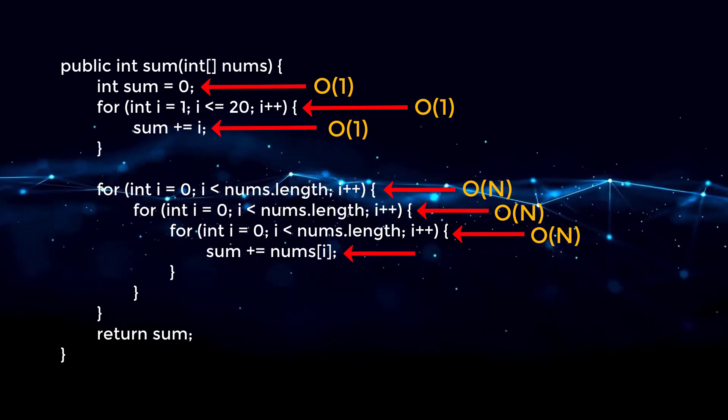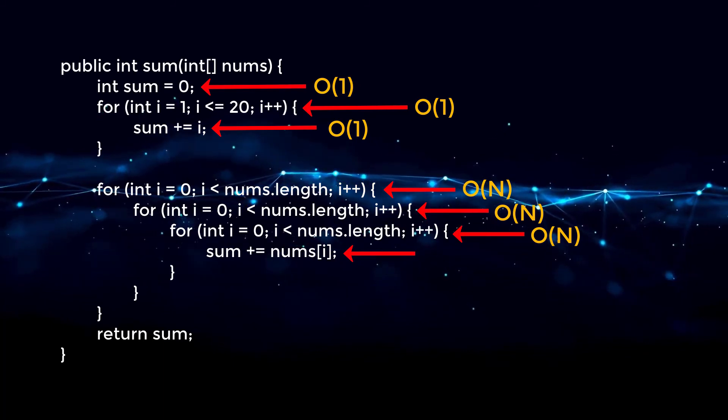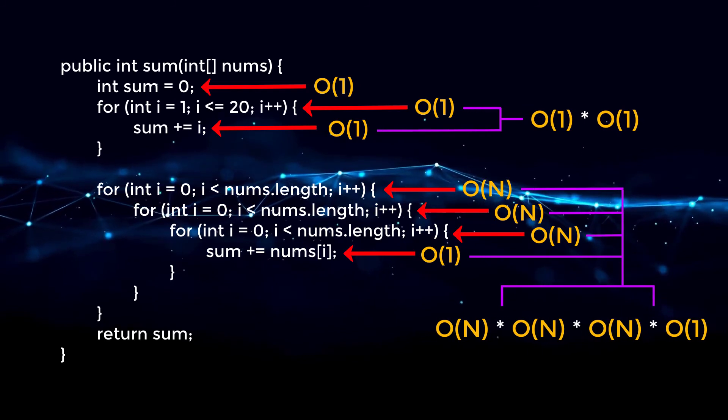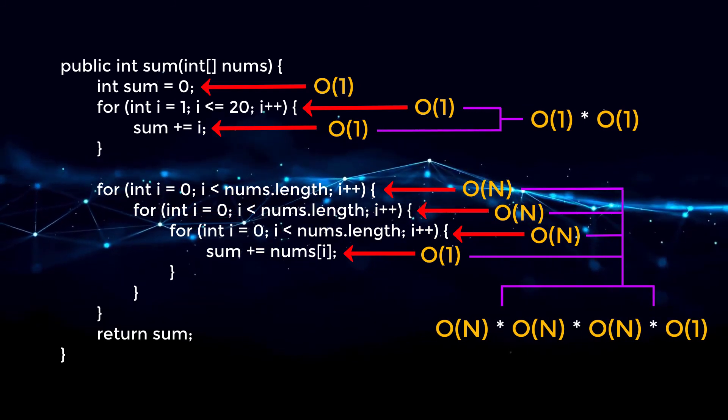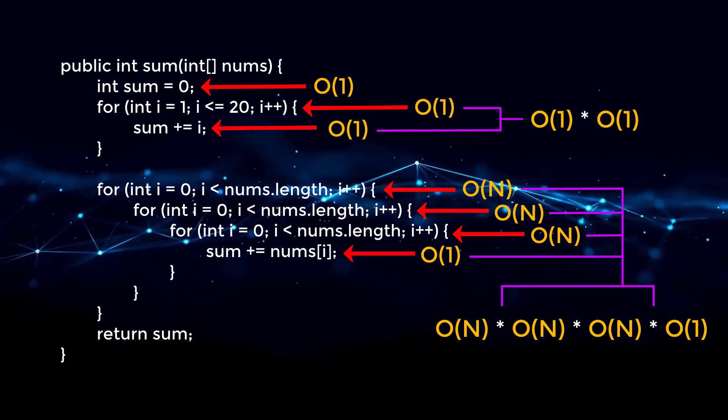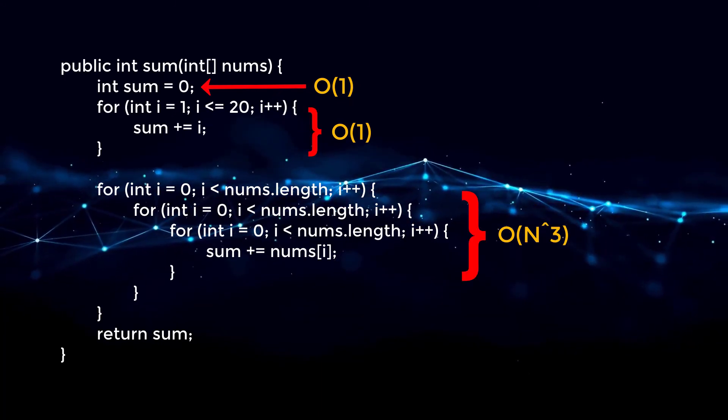And then inside of all of these nested for loops, we are summing up all the numbers and that's just going to be constant. So remember, any nested code, that means we are going to multiply those terms. So this massive chunk of for loops will just evaluate to Big O of n to the third.